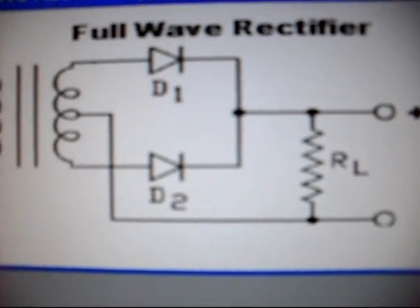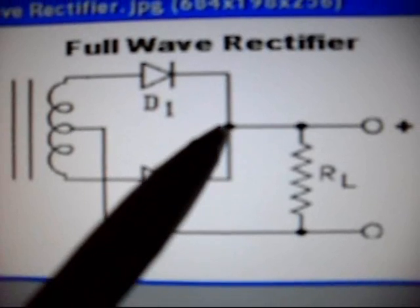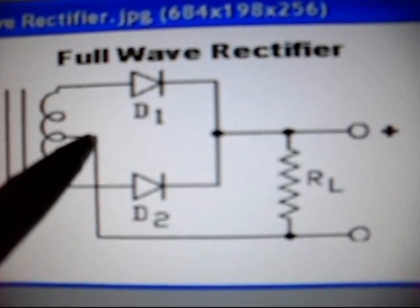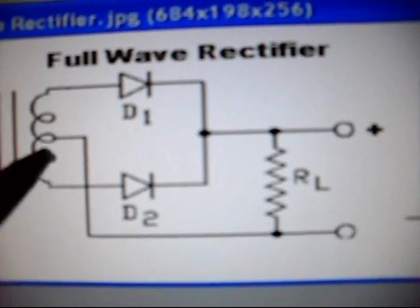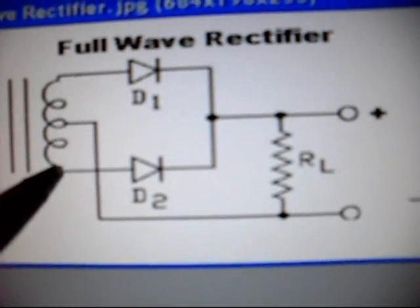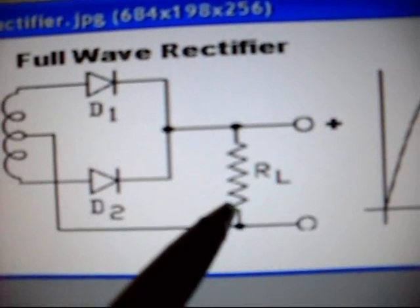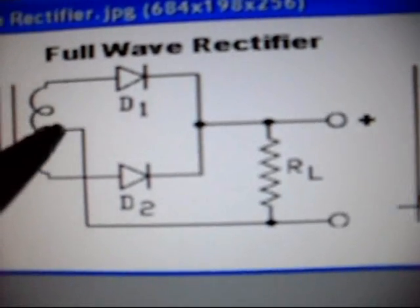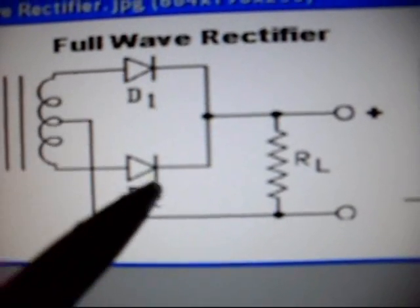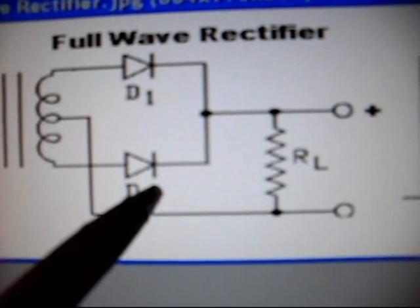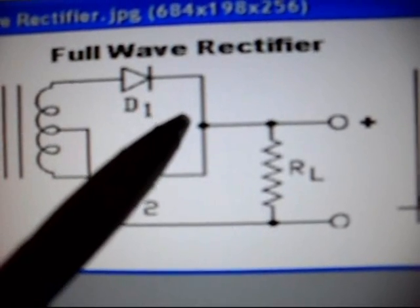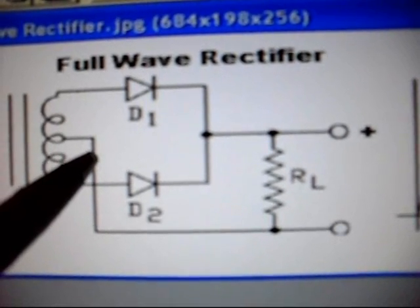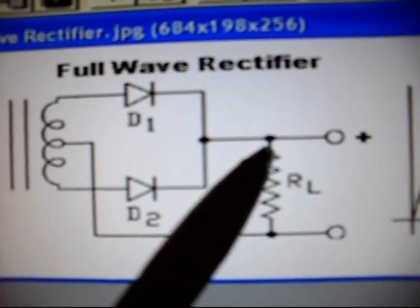In brief, on the first half of the cycle, when the top end of the secondary is positive with respect to the center tap, the bottom end is negative with respect to the center tap. Note that the load is returned to the center tap, not to the bottom of the secondary. Diode D1 is forward biased and diode D2 is reverse biased. D1 conducts current which flows back through the load and back to the center tap. The first half cycle appears across the load with the top end of the load resistor positive.